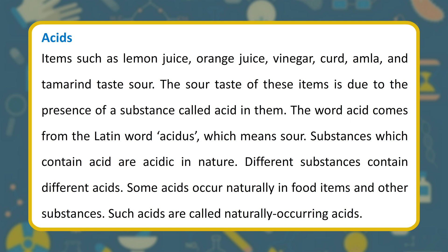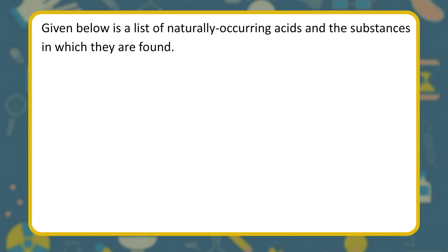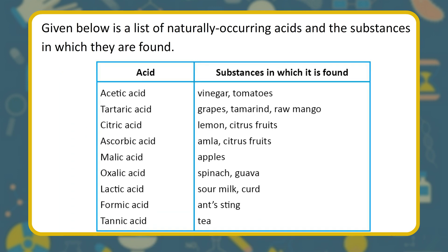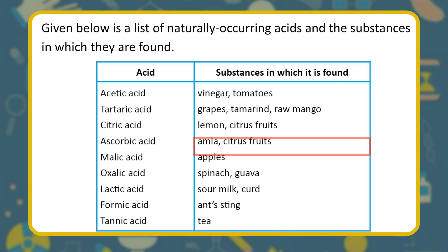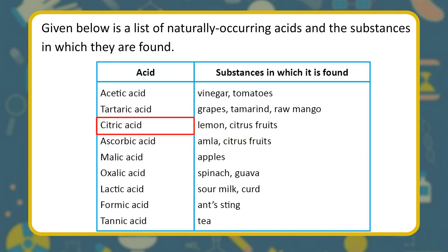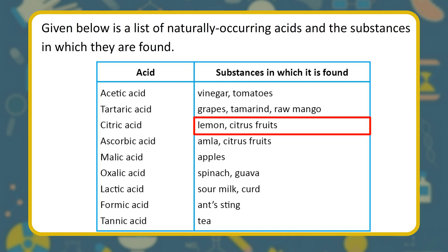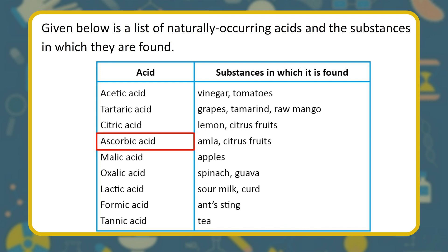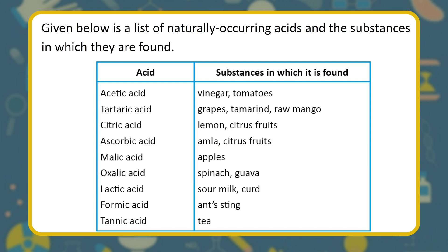Different substances contain different acids. Some acids occur naturally in food items and other substances — such acids are called naturally occurring acids. These include: acetic acid in vinegar and tomatoes; tartaric acid in grapes, tamarind, and raw mango; citric acid in lemon and citrus fruits; ascorbic acid in amla and citrus fruits; malic acid in apples; oxalic acid in spinach and guava; lactic acid in sour milk and curd.